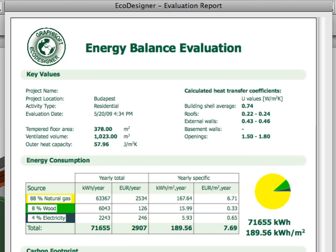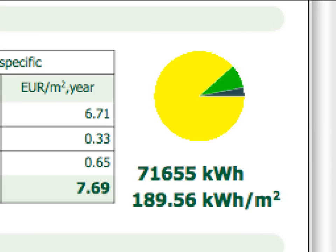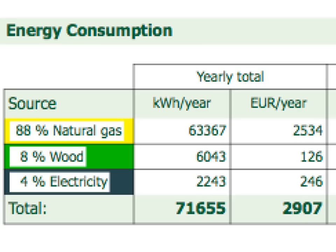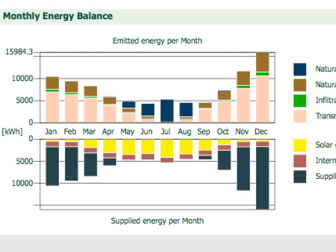The annual energy consumption is over 70,000 kWh. The resulting specific energy consumption is almost 190 kWh per square meter for this project. The carbon footprint is close to 16,000 kg of CO2 per year. The yearly total energy cost is almost 3,000 euros. The monthly energy balance graph displays a colored graph to compare the monthly emitted and supplied energy for the current design alternative.